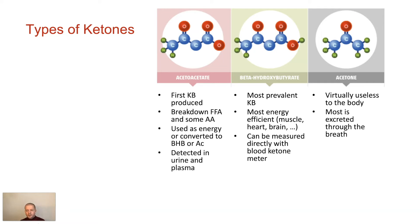Ketone bodies are formed in liver mitochondria, predominantly from fatty acids, but also from certain amino acids such as leucine. For use as fuel, ketone bodies are transported into tissues outside the liver and converted into acetyl-CoA, which then enters the citric acid cycle and is oxidized in the mitochondria for energy. In the brain, ketone bodies are also used to make fat from acetyl-CoA. Acetoacetate has a very characteristic smell occurring in breath and urine during ketosis, while acetone — more sweet and fruity — characterizes the breath of persons in ketosis or especially ketoacidosis.